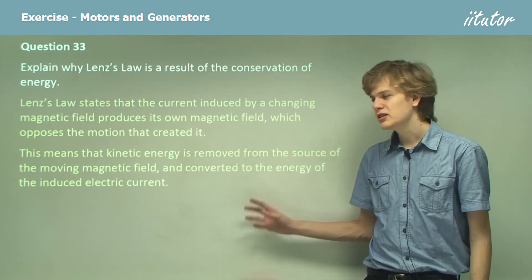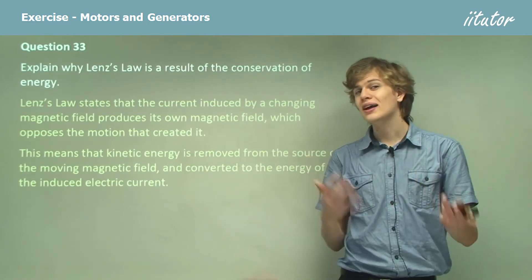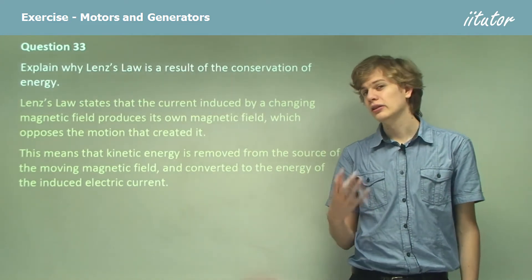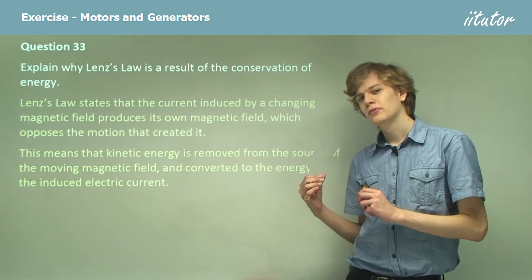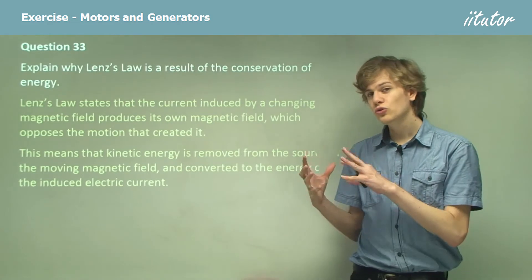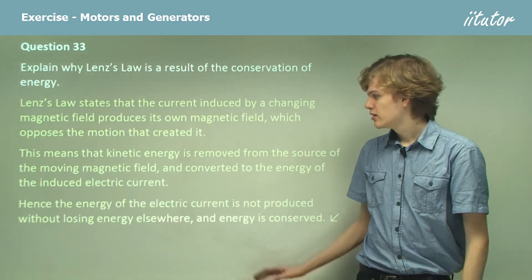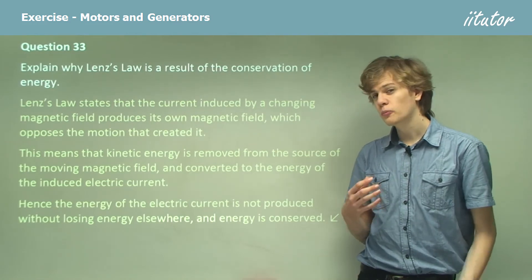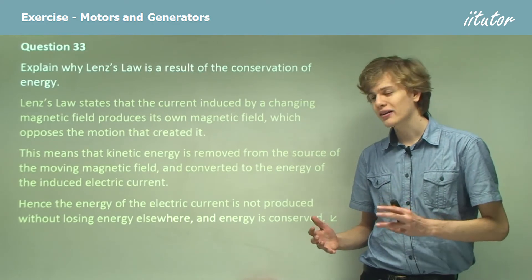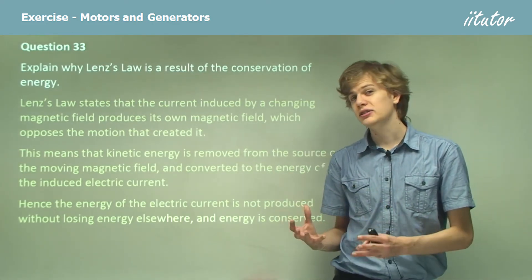This means that kinetic energy is removed from the source of the moving magnetic field — that is, the moving magnet in this example — and it's converted into the energy of the electric current. So instead of simply having unlimited electrical energy, we're losing kinetic energy from the magnet to make up for it. The energy of the electric current is not produced out of nowhere; it's taken from the kinetic energy of the magnet. So energy is conserved — we always have the same amount of energy in the system.